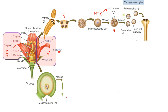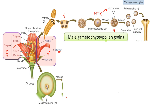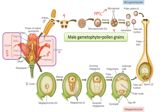At maturity, the pollen grain undergoes unequal mitosis, forming two cells: a smaller generative cell that later forms the male gametes, and a larger tube cell that forms the germ tube or pollen tube, which carries the male gametes towards the egg. The male gametophyte, or male gamete-forming structure, is the pollen grain.